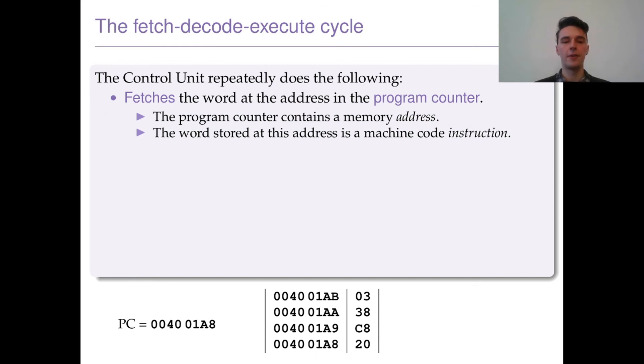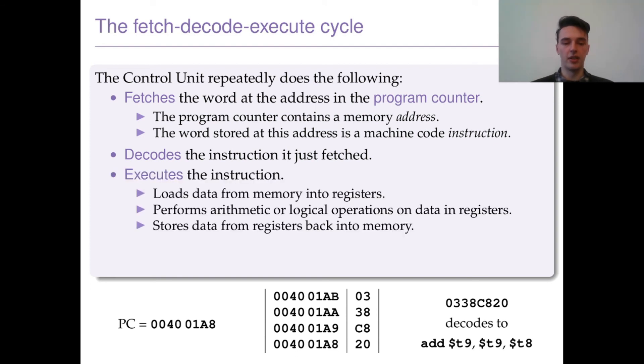Let's have a look at how we turn this into actually executing code. The control unit repeatedly just does the same thing over and over. It fetches the word at the address in the program counter. The program counter at the bottom you can see is 004001A8. At the bottom, it has the byte 20 in it, so it tells the computer that this is where the instruction is stored.